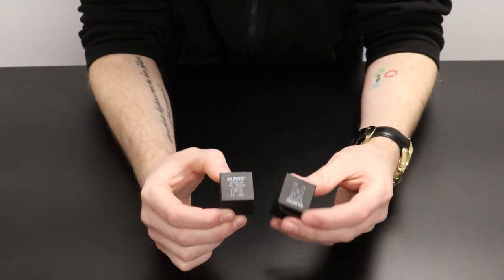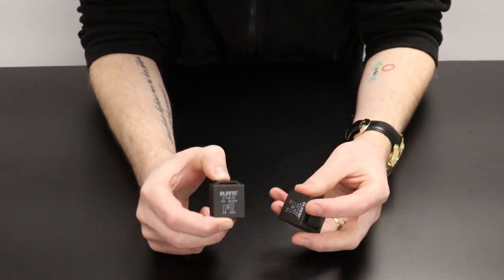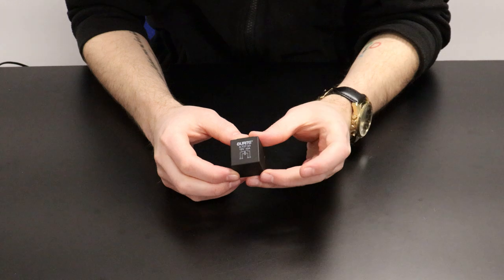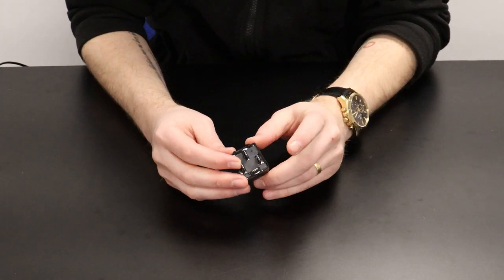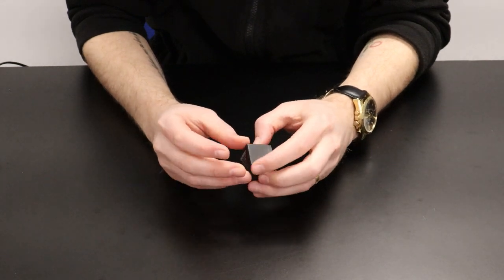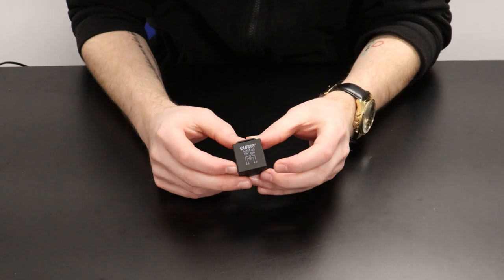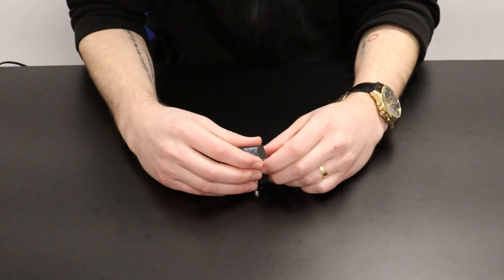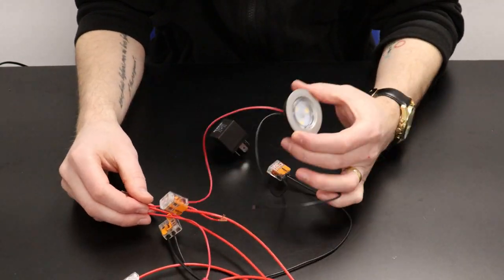Today we're going to show you these two relays, our more common make and break and changeover relay. So firstly, make and break relays. These are four pin relays which are usually in a normally open configuration which means that when the coil has no voltage applied or is at rest, there's no voltage going through the main circuit to our load. In our case it will be our LED light.